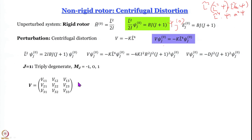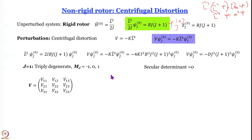The V matrix has elements V₁₁, V₁₂, V₁₃, etc. Our job is to find the matrix elements. From the linear equations written earlier, for solutions the secular determinant must be zero — this is Cramer's rule.